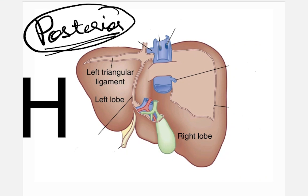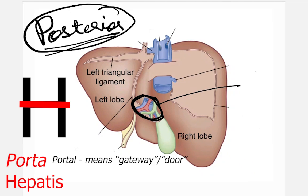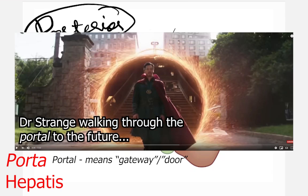The most important structure in that H is the crossbar, which is called the porta hepatis — the gate of the liver — because this is the gateway through which so many structures enter or leave the liver.